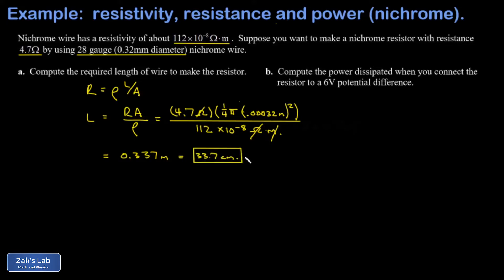In part B, we're asked to compute the power dissipated by this resistor when we connect it to a 6-volt potential difference. So we're simply using the formula for the power dissipated by a resistor in terms of voltage and resistance. That's V squared over R.